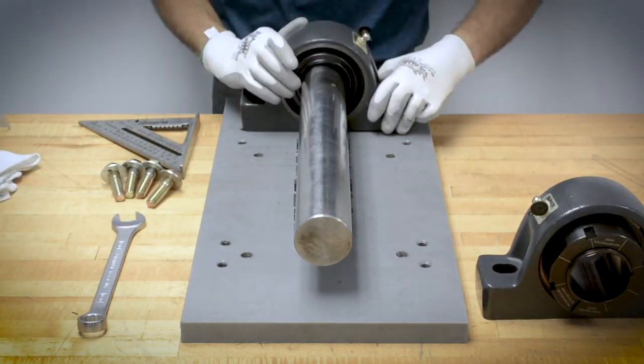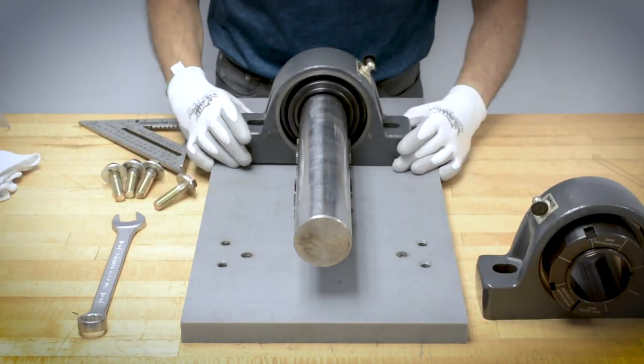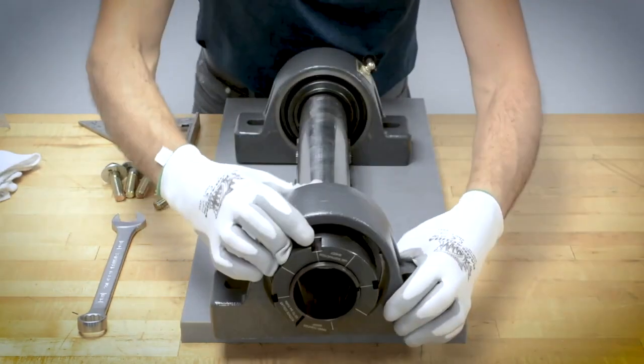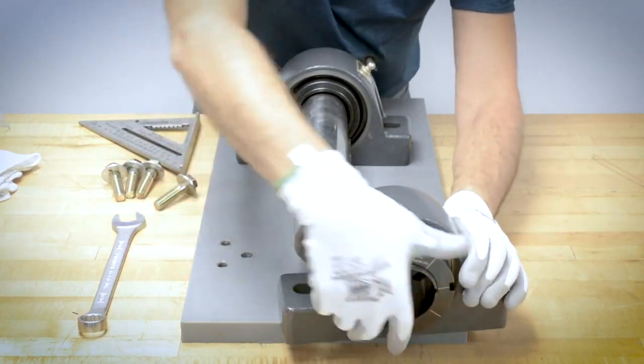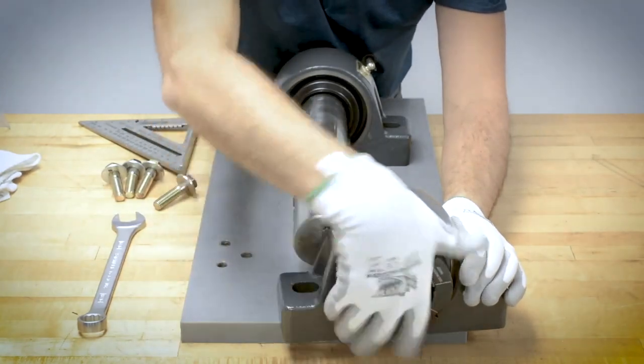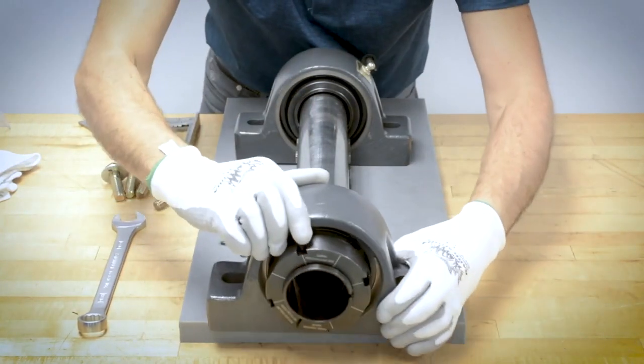Slide each bearing onto the shaft but do not exceed 2 degrees misalignment. If the bearing does not fit loosely, turn the collar nut counterclockwise one to two additional turns to open the lock sleeve.